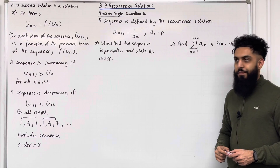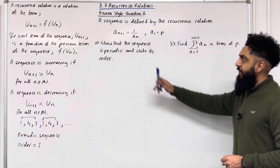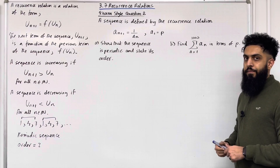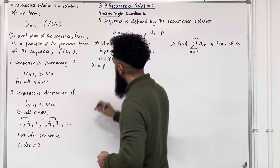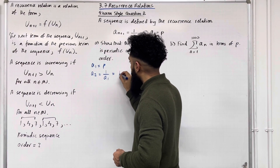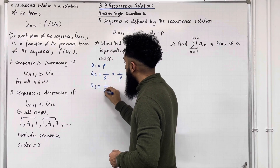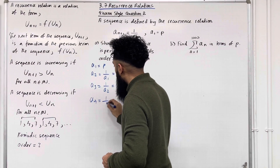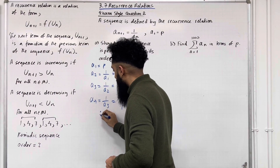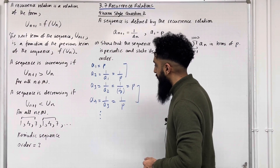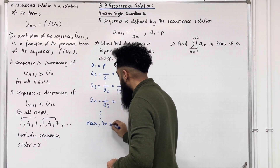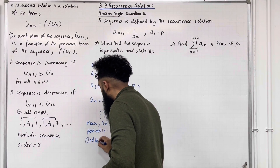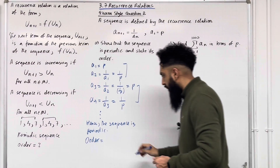Here is exam style question 2. A sequence is defined by the recurrence relation a_(N+1) = 1/a_N, where a1 = p. Part A: show that the sequence is periodic and state its order. We know a1 = p, a2 = 1/a1 = 1/p, a3 = 1/a2 = 1/(1/p) = p, a4 = 1/a3 = 1/p. We have a repetition in cycles of 2. Hence the sequence is periodic, and the order is 2.